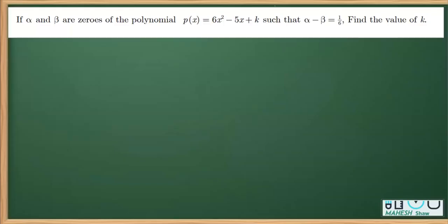In this question from the chapter polynomial, if alpha and beta are the zeros of this polynomial and we are given one more relation between alpha and beta, that is alpha minus beta is 1/6, we have to get k.